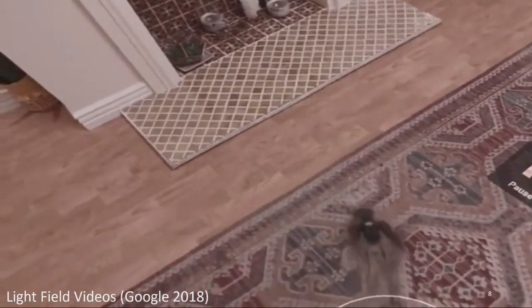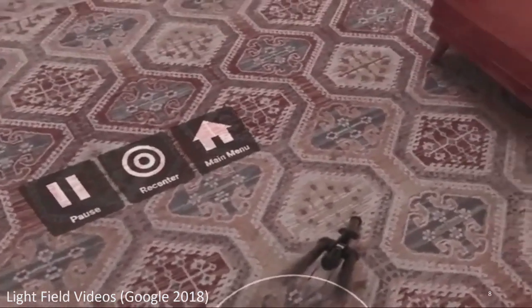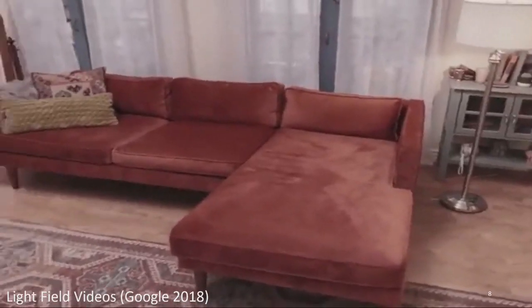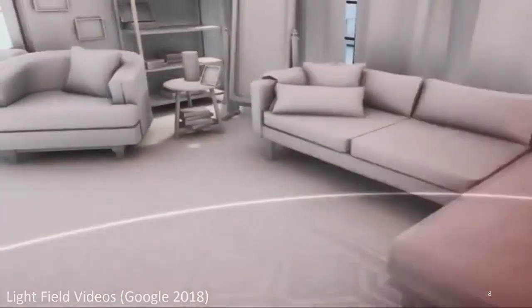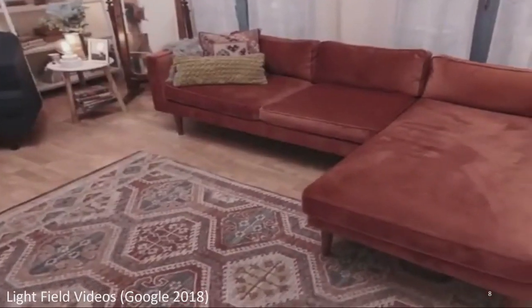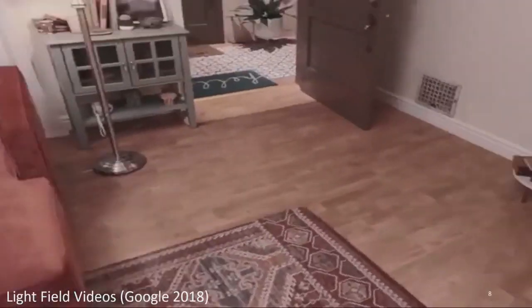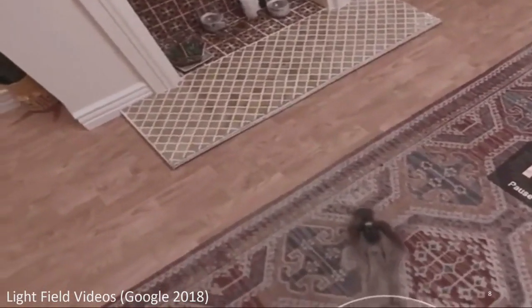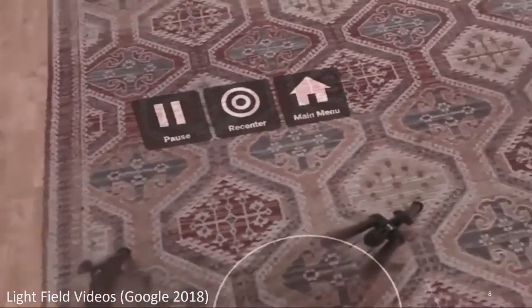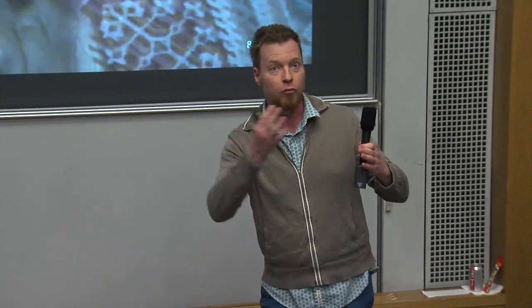Far more exciting are light field videos — a cutting-edge area of VR. Here, you can actually translate around in space. A user can move outside the area captured in the light field video. Modern light field cameras can capture about a cubic meter of information, allowing good translation in space. This greatly increases immersion: you can experience parallax for distant objects, mirrors reflect as you move, and iridescent things shine.